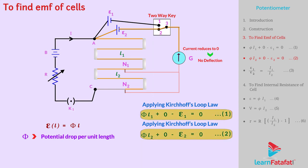From equations 1 and 2, we get ε₁/ε₂ = l₁/l₂. Label this as equation number 3. If one of cell EMF is known, then EMF of other cell can be easily calculated.